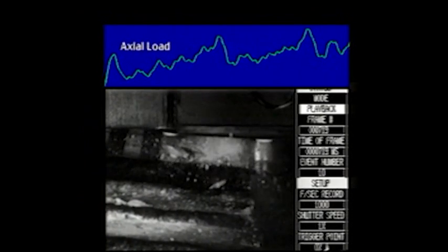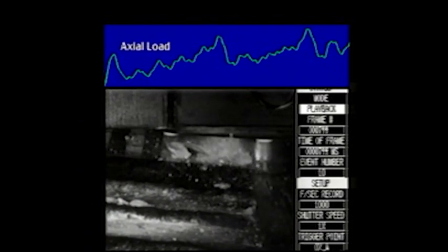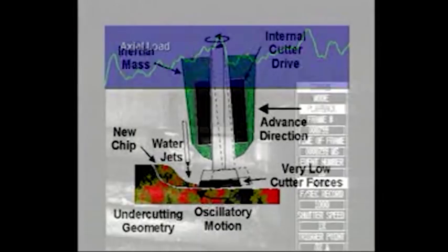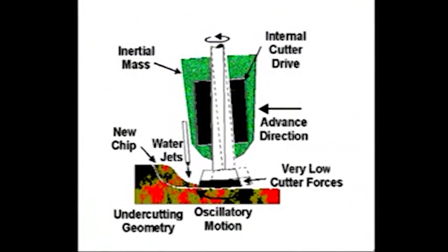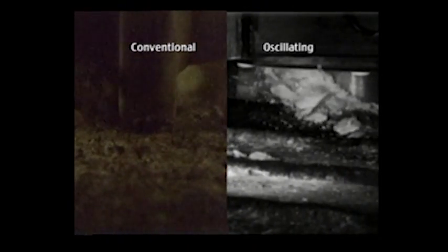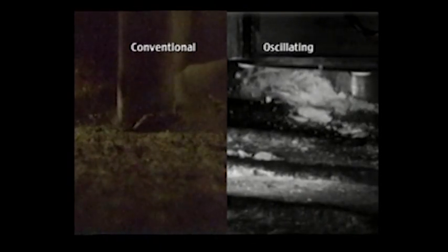As a result, cutter lifetimes are increased dramatically. The oscillating disc cutter also uses a large inertial mass built into the machine body to further dampen cutting loads. High pressure water jets assist the cutting action in very hard igneous rocks. The energy efficiency of the system is obvious when compared to conventional disc cutters, as evidenced by the large chip sizes produced.